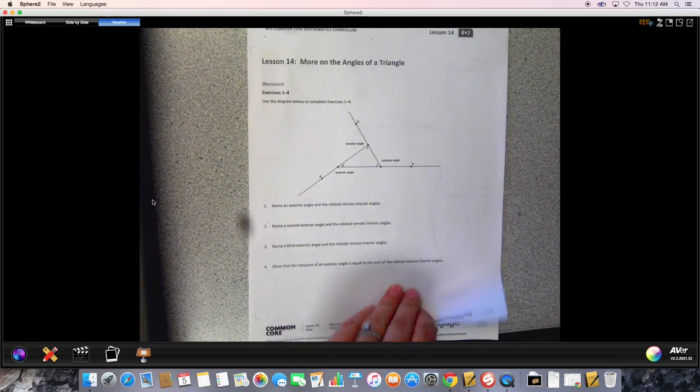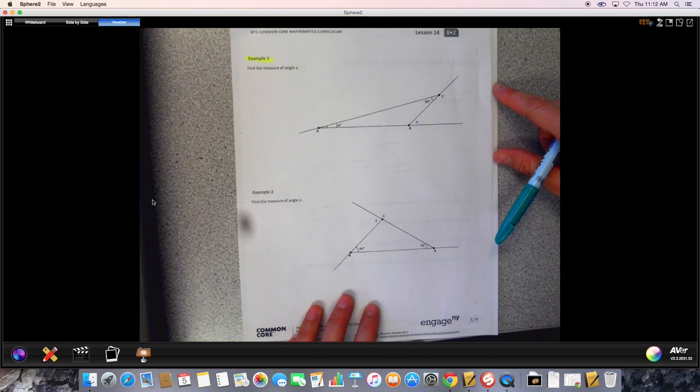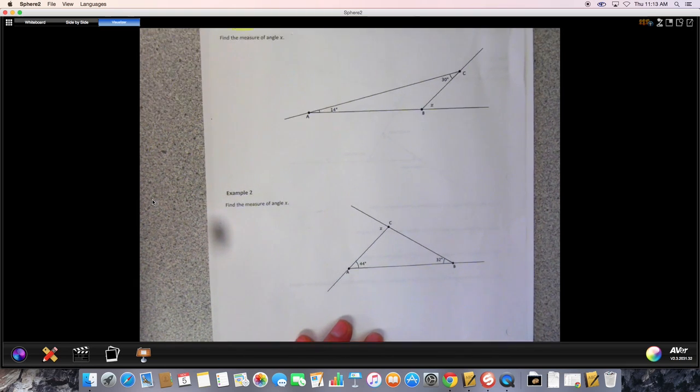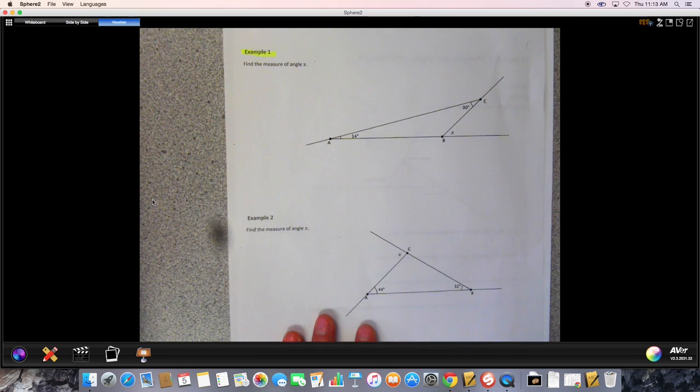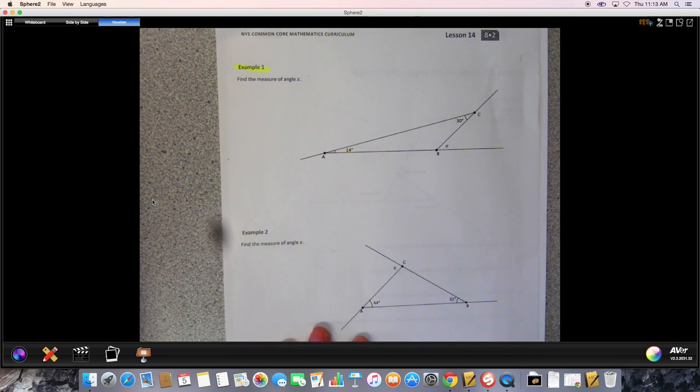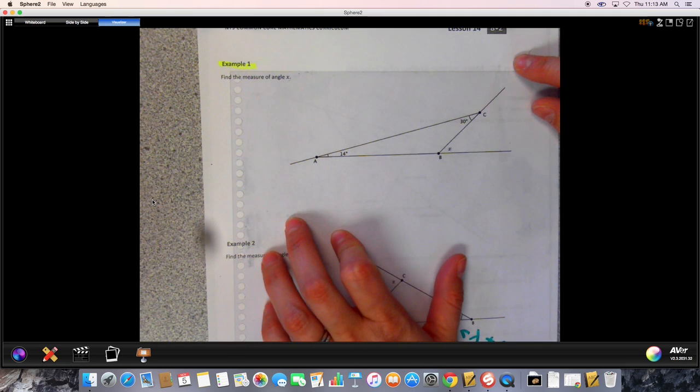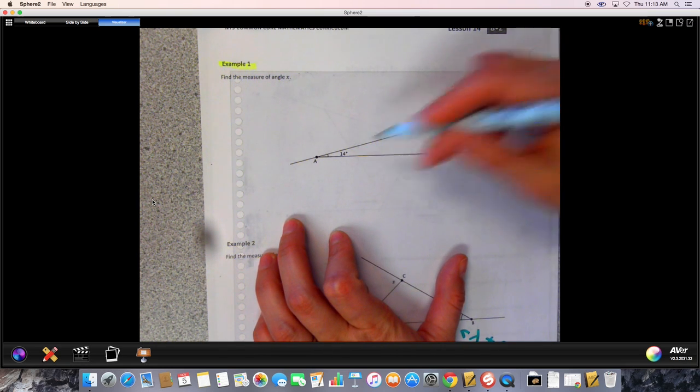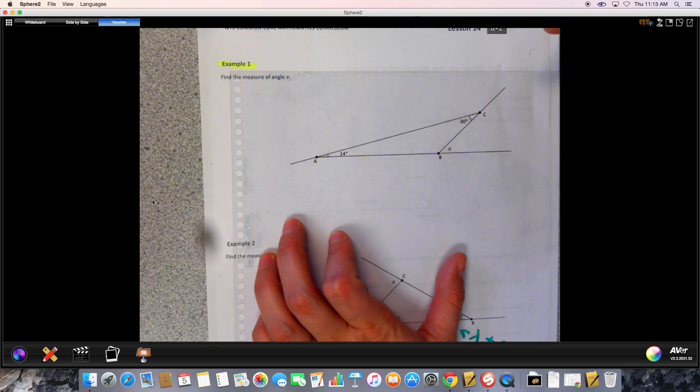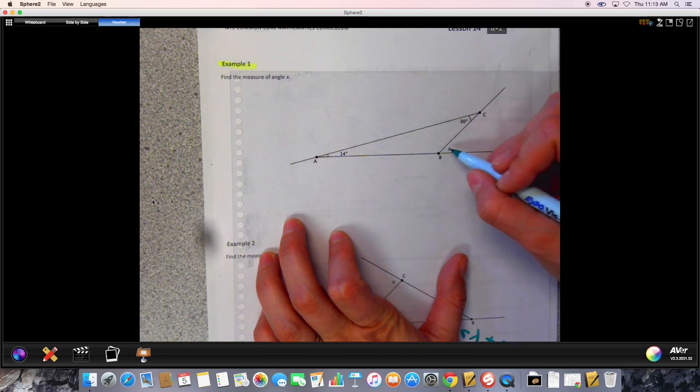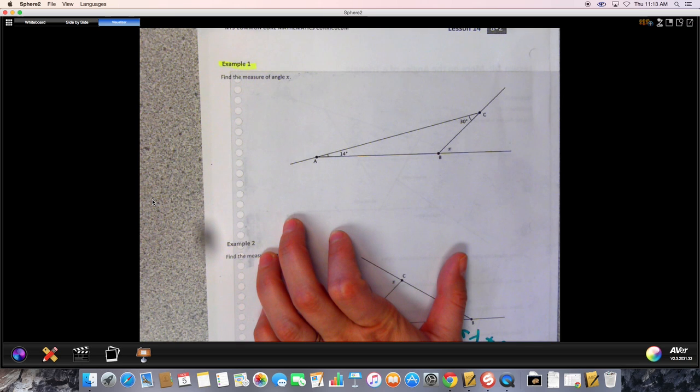So let's turn to the next page, page 74. We're just going to do Example 1 on here, and because Example 2 is very similar, that's some extra practice for you if you need it. Example 1: find the measure of x. So you have this triangle on here, and you have 14 degrees for the measure of angle a, 30 degrees for c, and you don't have anything for b. And x is right here on the exterior of b.